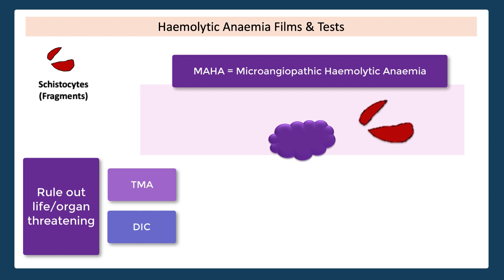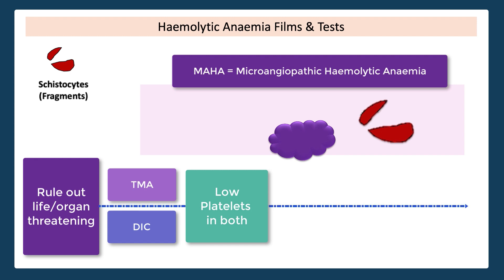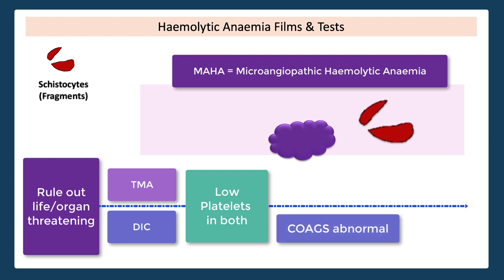The micro blood clots tend to use up platelets, and so a key clue to suggest this more sinister pathology is the presence of thrombocytopenia. Next, we must delineate between TMA and DIC, and to do this we perform coags. In DIC, these mini blood clots are consuming platelets and clotting factors, whilst in TMA the clots are largely platelet-based and don't tend to consume clotting factors quite so much. So in TMA the coags are normal, whilst in DIC these would be abnormal. Fragments or schistocytes equal MAHA, but MAHA might be caused by a rare, life-threatening condition, so we need to explore beyond the MAHA by checking the platelets and coags, which when abnormal will point you in the direction of these life-threatening pathologies.